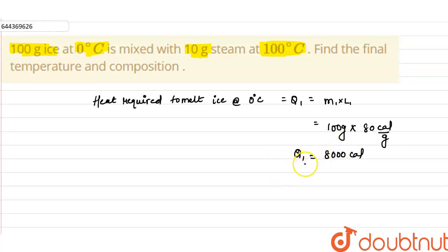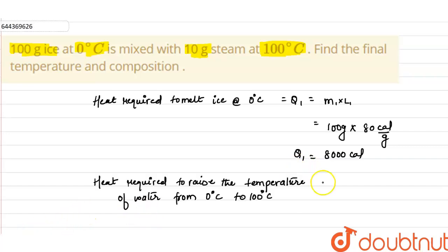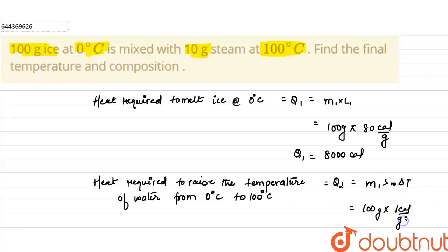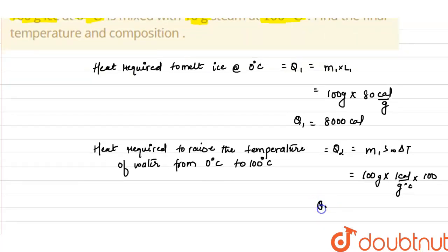Now let us find the heat required to raise the temperature of water from 0°C to 100°C. Q2 = mass × specific heat of water × ΔT = 100 g × 1 cal/g°C × 100 = 10,000 calories.